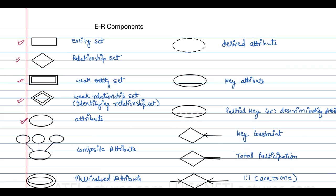This is how you can represent an attribute, and this is representing a composite attribute and this is representing a multivalued attribute.